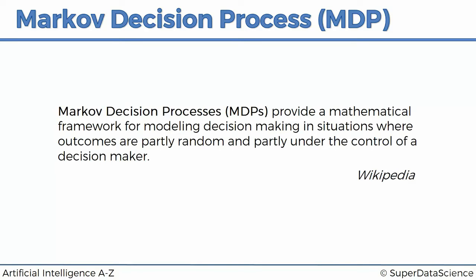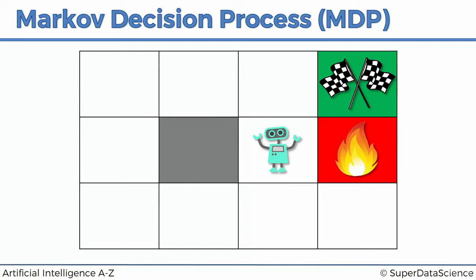A Markov decision process, or MDP, provides a mathematical framework for modeling decision making in situations where outcomes are partly random and partly under control of a decision maker. It's important to understand that Markov decision processes are a different concept to a Markov process — they're a mathematical framework. Understanding what a Markov process is still helps in understanding an MDP. A Markov decision process is exactly what we've been discussing: the agent lives in an environment where it has some control, but not full control. It can decide to go up, but it knows there's an 80% chance it'll go up, 10% chance it'll go left, and 10% chance it'll go right. Not everything is fully under its control — there is some randomness.